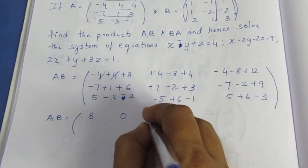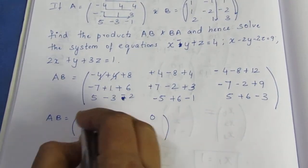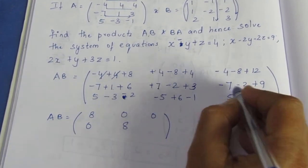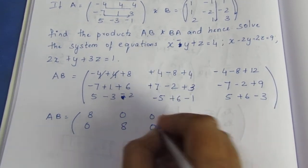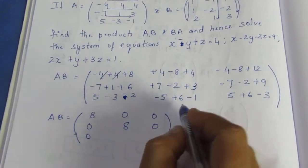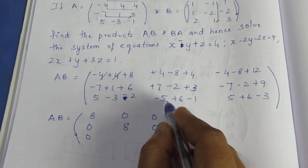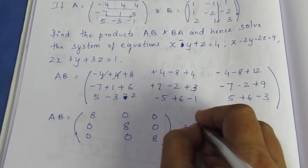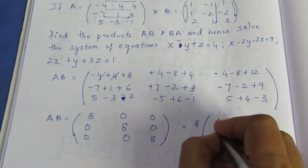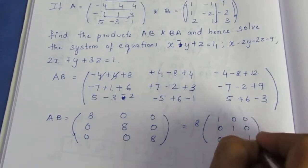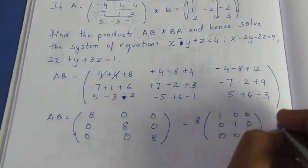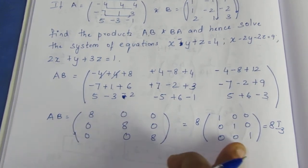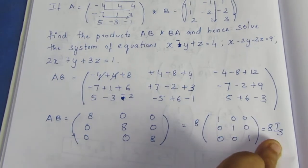Continuing AB: plus 8 minus 8 is 0; minus 12 plus 12 is 0; plus 7 minus 7 is 0; this entry is 7 plus 1 is 8; minus 9 plus 9 is 0; minus 5 plus 5 is 0; minus 6 plus 6 is 0; and 11 minus 3 is 8. So AB equals 8 times the identity matrix I₃. This is equal to 8·I₃.